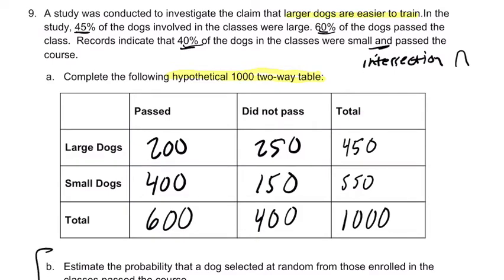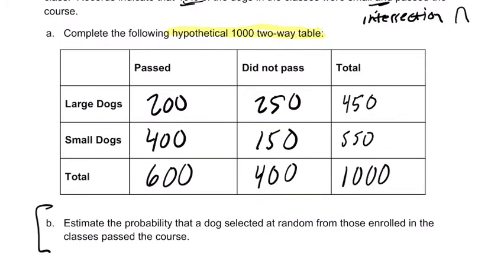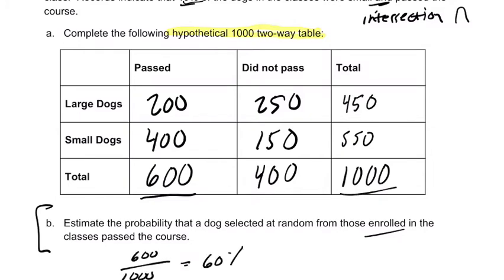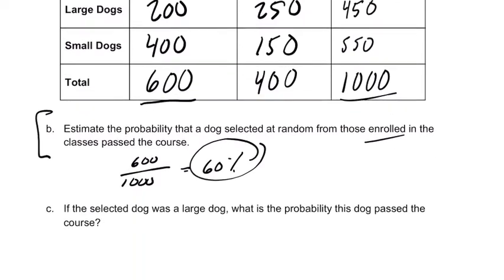Then we go to part B: estimate the probability that a dog selected at random from those enrolled in the classes passed the course. Out of all the dogs enrolled, 600 out of 1,000 passed, so we're estimating the probability is 60%.